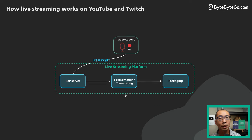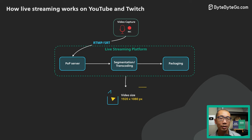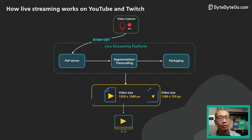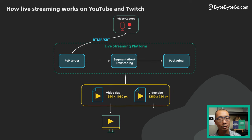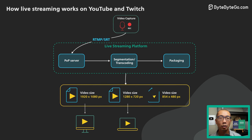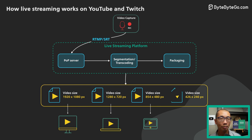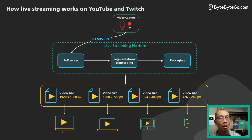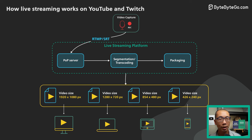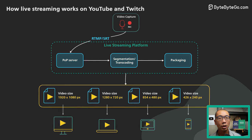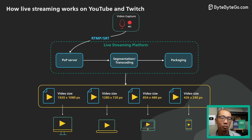At the platform, the main goal of additional processing is to offer the video stream in different qualities and bit rates. Modern video players automatically choose the best video resolution and bit rate based on the viewer's internet connection quality, and can adjust on the fly by requesting different bit rates as network conditions change. This is called adaptive bit rate streaming.